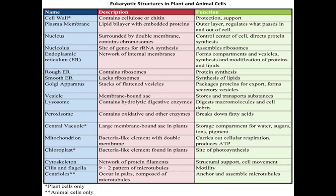A vesicle is a membrane-bound sac that stores and transports substances. Lysosomes contain hydrolytic digestive enzymes and they digest macromolecules and cell debris. Peroxisomes contain oxidative and other enzymes that break down fatty acids. The central vacuole, again only found in plants, is a large membrane-bound sac.